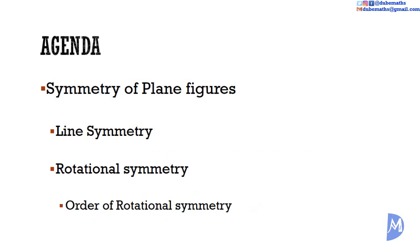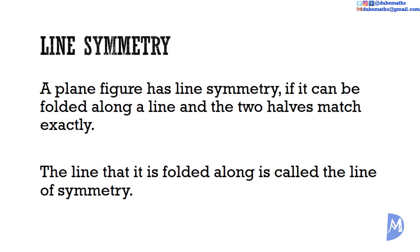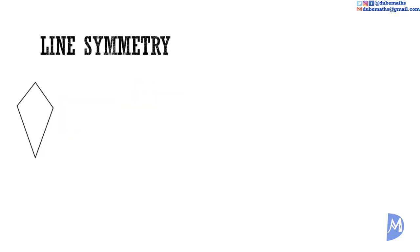We will end with the counterintuitive notion that a plane figure can have line symmetry but not rotational symmetry, and vice versa. A plane figure has line symmetry if it can be folded along a line and the two halves match exactly. The line that it is folded along is called the line of symmetry.